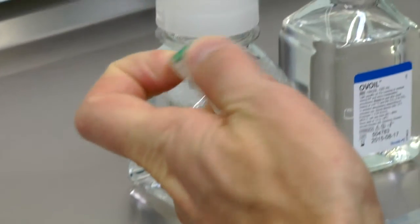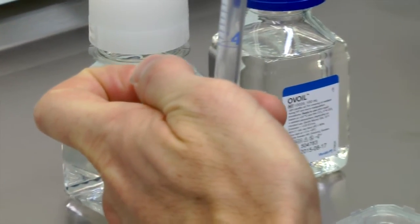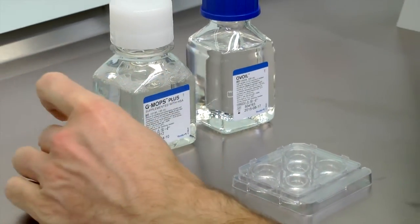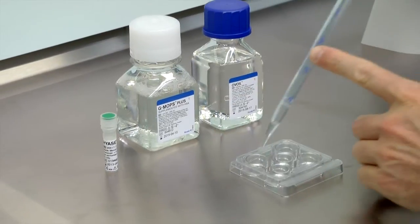Dilute HiAce with GMOPS Plus. Prepare your denudation dishes by adding the diluted HiAce to one of the wells and GMOPS Plus for washing to the remaining wells.